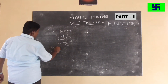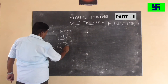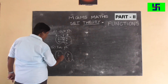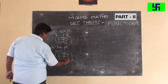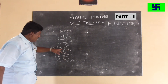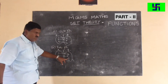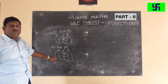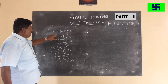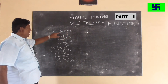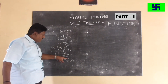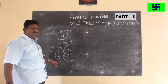What is an into function? If one element of set B is left out without a pre-image — even one or two elements — then it is called an into function. The function from A to B is called an onto function if all elements in set B have pre-images in set A.